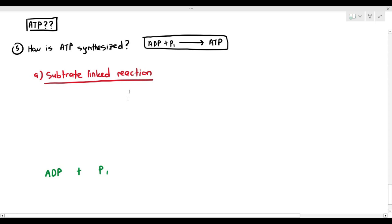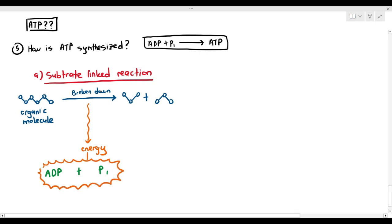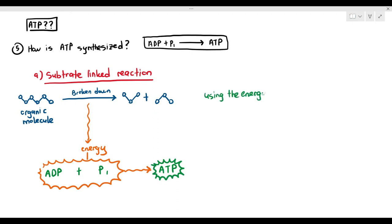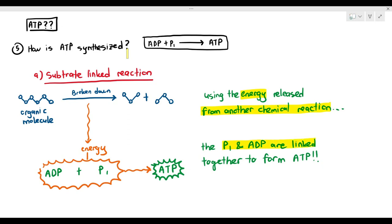For the purpose of this, all you have to understand is that in your cells you may have some organic molecules, for example glucose. The catabolism or breakdown of that organic molecule might release a little bit of energy, and that energy is directly used to join ADP and phosphate together. So substrate-linked reaction means using the energy released from another chemical reaction, the phosphate groups and ADP are linked together to form ATP. You must know the definition of substrate-linked reaction.